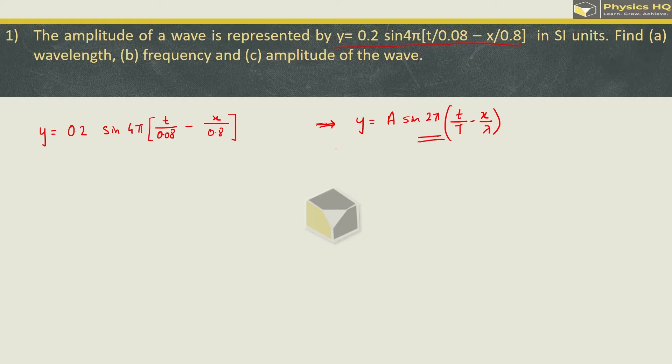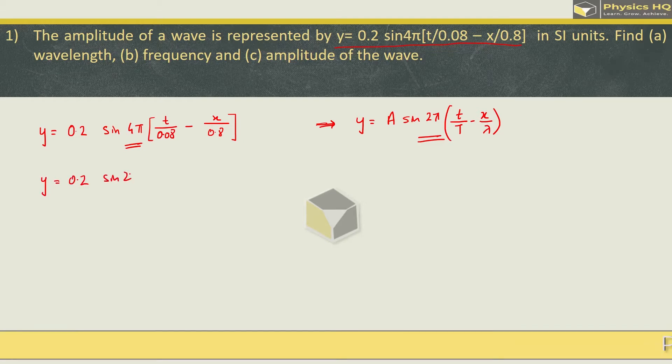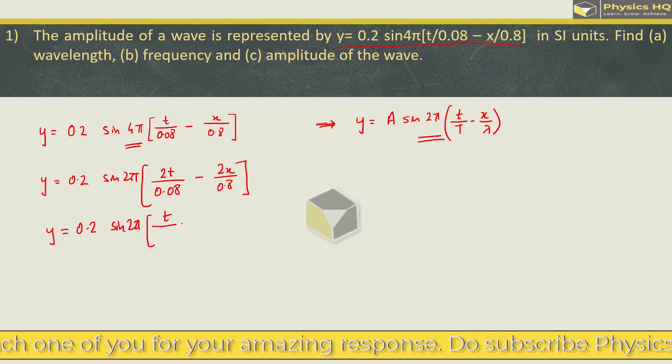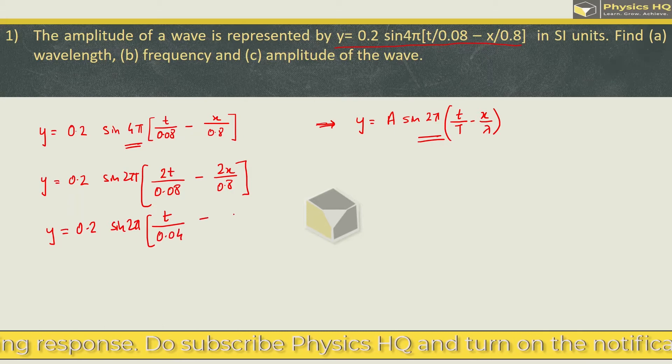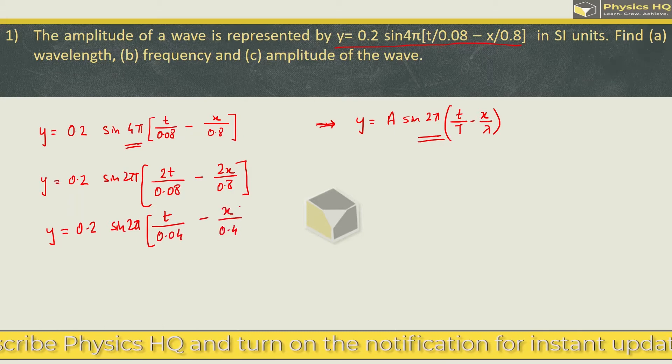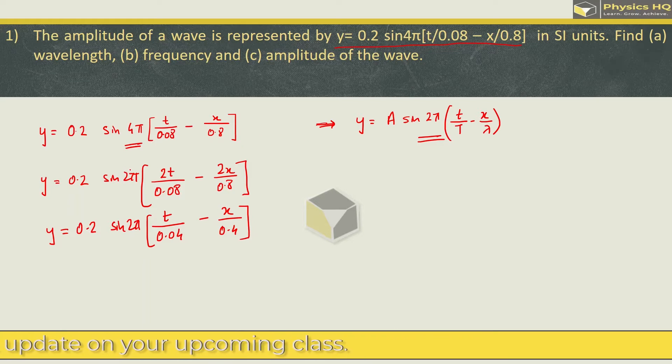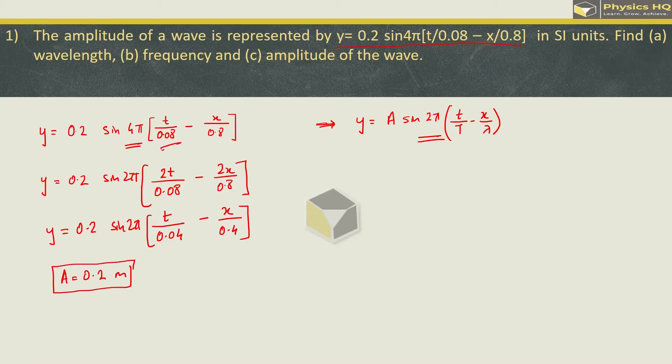Here we have sin of 2 pi and here people have sin of 4 pi. So what do we need to do? This is extra 2. We put it in the bracket. So we will have y equals 0.2 sin of 2 pi times 2t upon 0.08 minus 2x upon 0.8. Let us simplify this a little bit. So we got y equals 0.2 sin of 2 pi, t upon 2 cancel. So we will be left with 0.04 and x upon 0.4. This is a small difference people do not observe and compare and write the answer. The amplitude here is 0.2 meter.